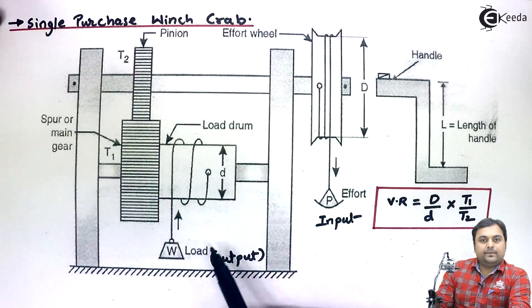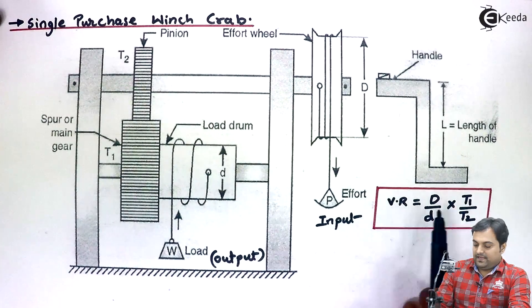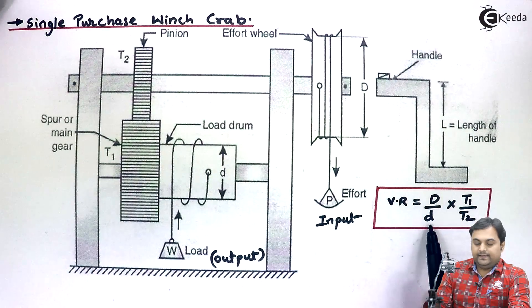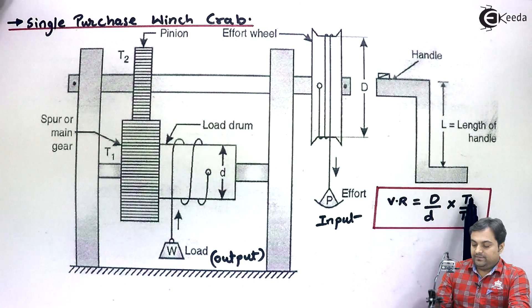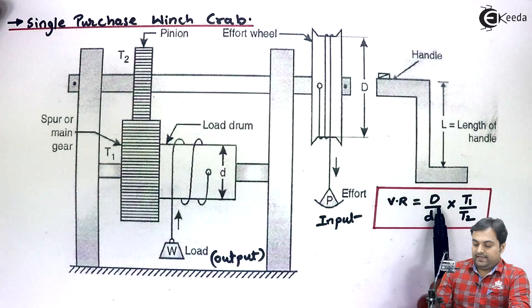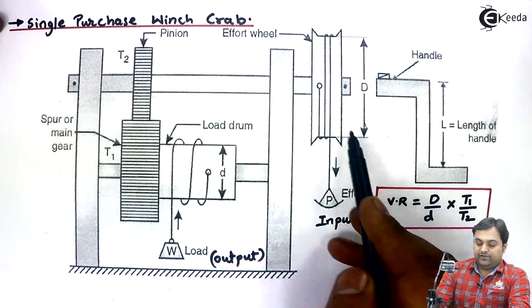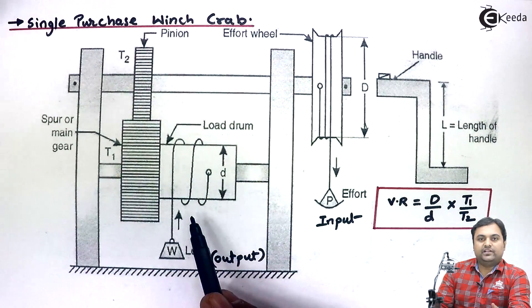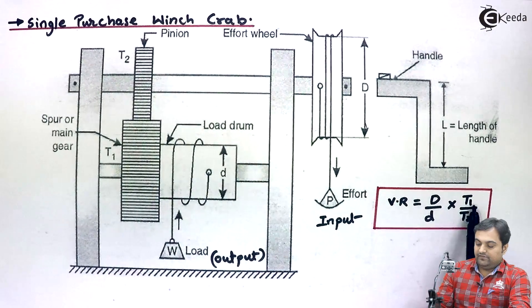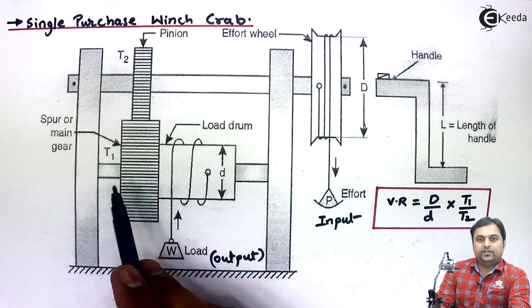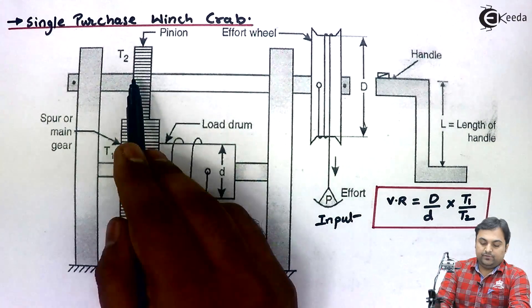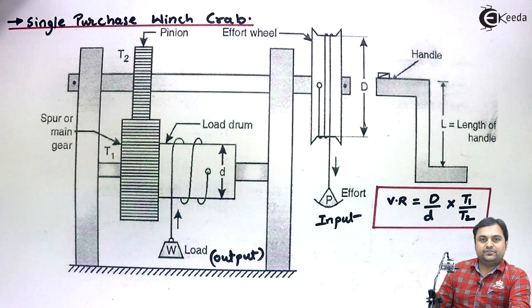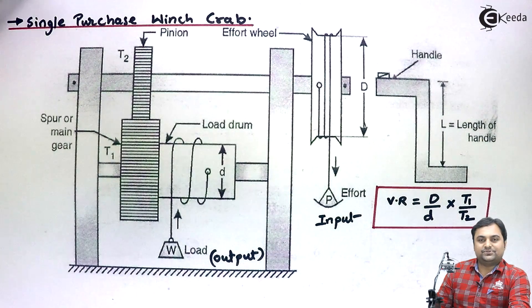Here the velocity ratio formula is given by capital D upon small d multiplied by T1 by T2, where capital D is the diameter of effort wheel, small d is the diameter of load drum or load axle, T1 is the number of teeth on spur gear or bigger gear, T2 is the number of teeth on pinion or smaller gear. So I hope in this video single purchase winch crab has been understood.